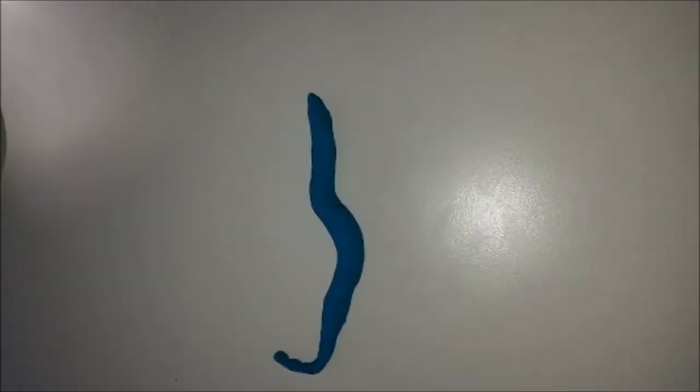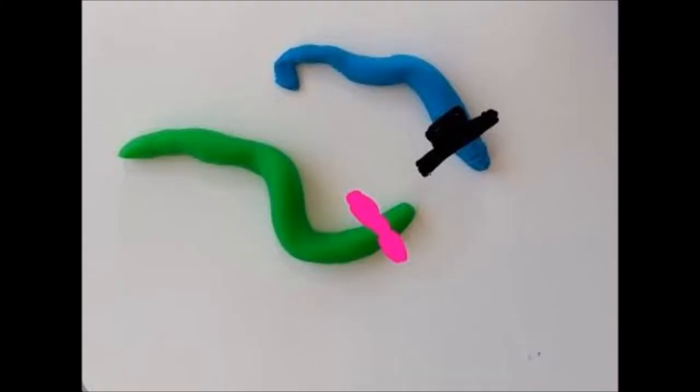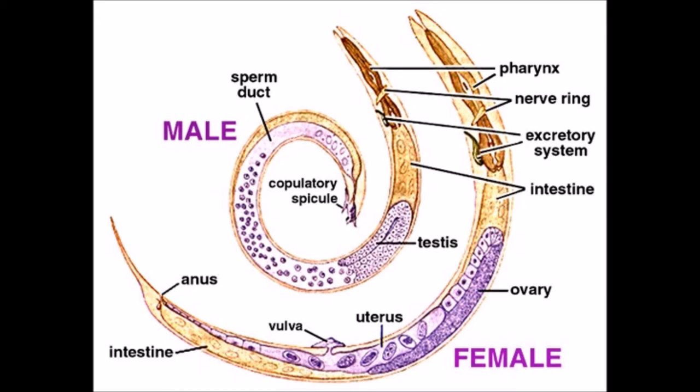Nematodes move by the contraction of their longitudinal muscles. The animal moves by thrashing back and forth. Nematodes can be boys or girls, or they can be both a boy and a girl at the same time.